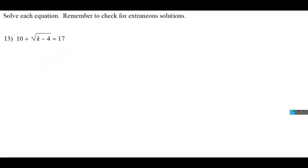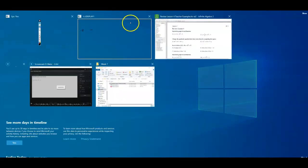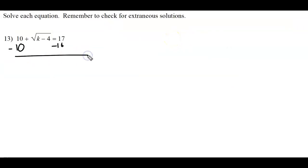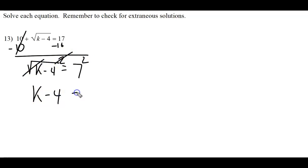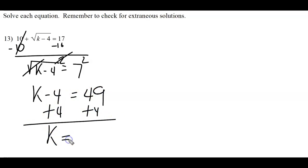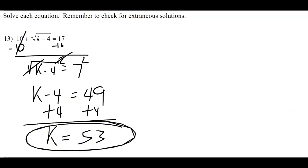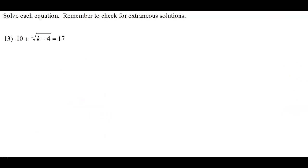Now let's talk about solving radical equations — three different types. Type 1: subtract 10 from both sides to isolate the square root, then square both sides to cancel the square root, giving 49. Then add 4 and we're done.